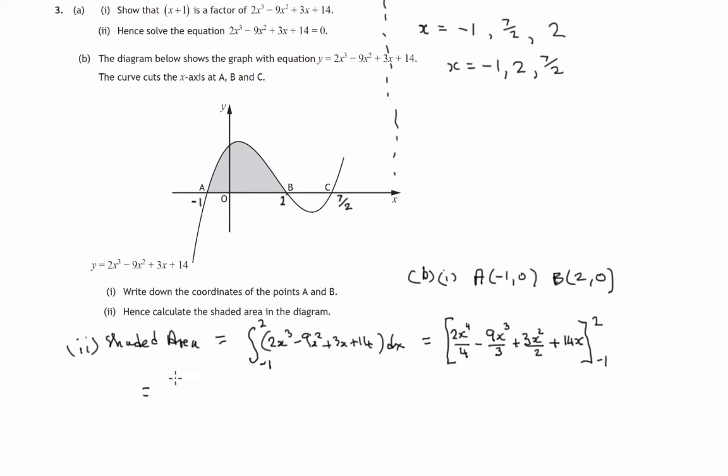So let's try and simplify it first before we plug in these. There is cancelling, 2 into 2 goes 1, 2 into 4 goes 2. So we've got x to the 4 over 2. And there's cancelling, 3 into 3 goes 1, 3 into 9 goes 3. So that's minus 3x cubed. No cancelling in this one. And a 14x.